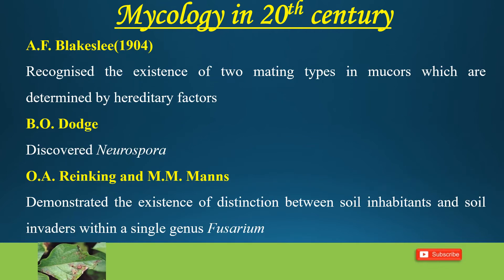Blakeslee, during the year 1904, recognized the existence of two mating types in Mucor, which were determined by hereditary factors. Bevo Dodge discovered Neurospora. And Rankin and Manse demonstrated the existence of a distinction between soil inhabitants and soil invaders within a single genus, Fusarium.